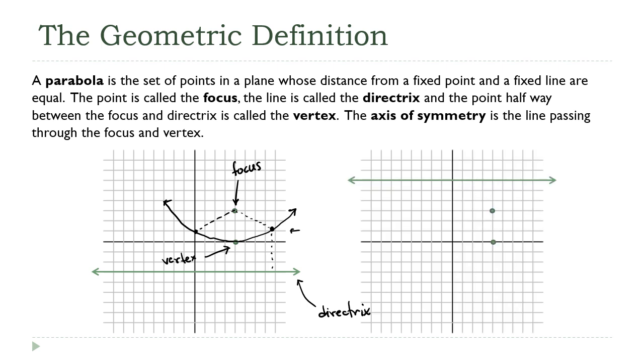We could just as easily draw the directrix above the focus. So this point here is now the focus, the directrix is still the line, and the vertex is this point here in the middle. That vertex is always going to be between the focus and the directrix. Now, if you orient them this way, you're going to get an upside-down parabola, which you've also probably seen before.